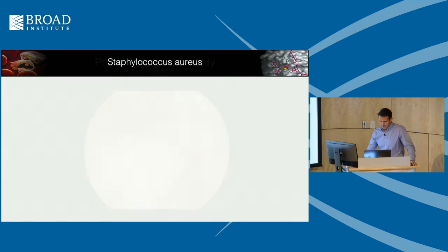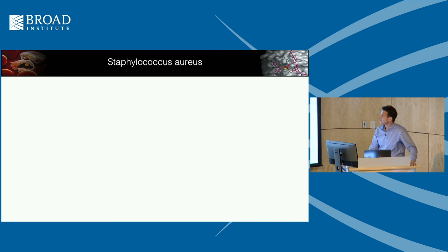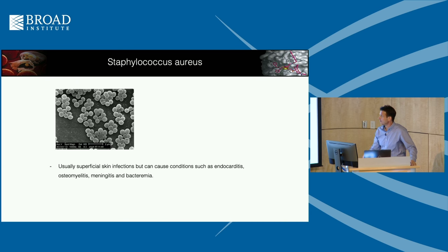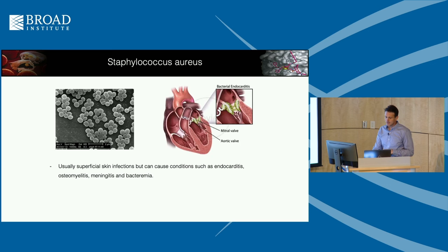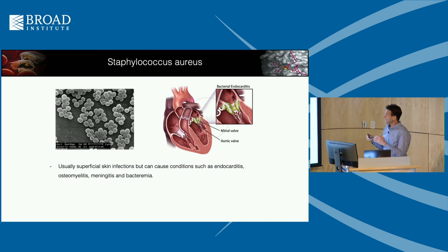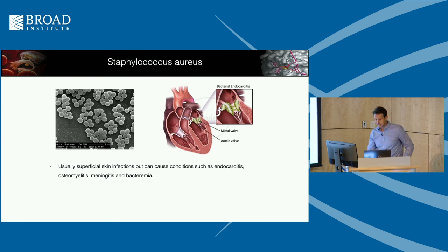Now I want to shift to talk about bacteria. The first is Staph aureus — a superficial skin infection but one that causes major problems in humans. We got interested in staph because of a condition called endocarditis, where staph bacteria gets into the bloodstream, finds a place to sit down, and forms a biofilm that's very hard to clear. It tends to form on things like heart valves, and if that happens, you have to go in and remove valves — a very invasive procedure.